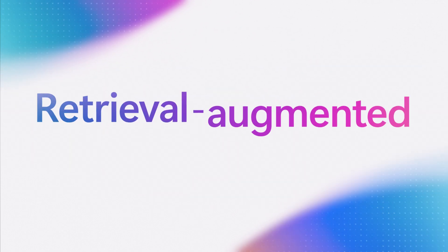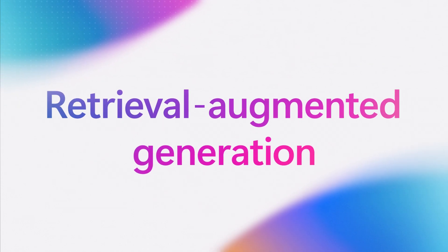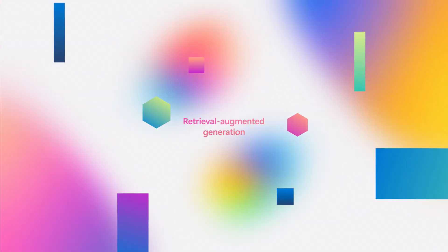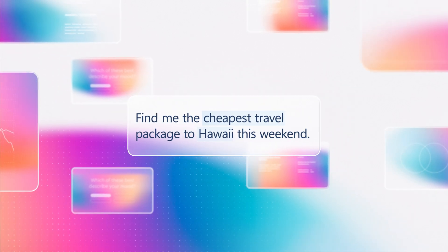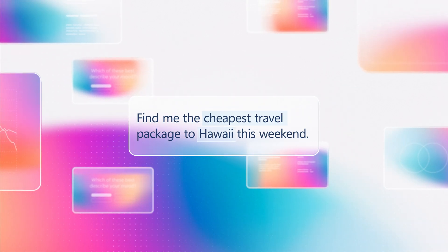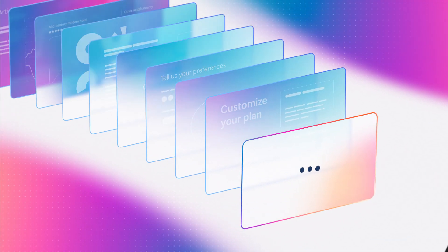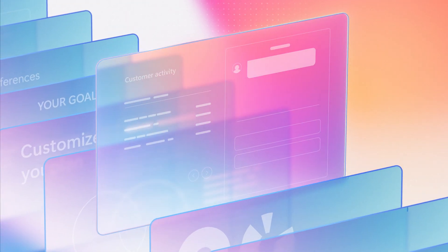That's where REG, or Retrieval Augmented Generation, comes in. It finds relevant information fast to help apps more precisely answer questions and generate content. REG is used in a wide range of applications, from personalized recommendation engines to customer support portals.